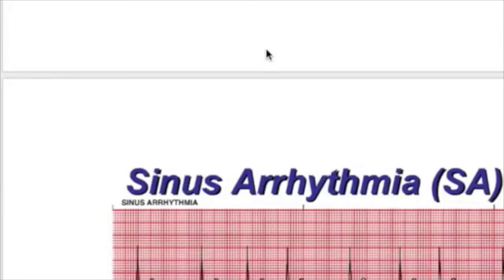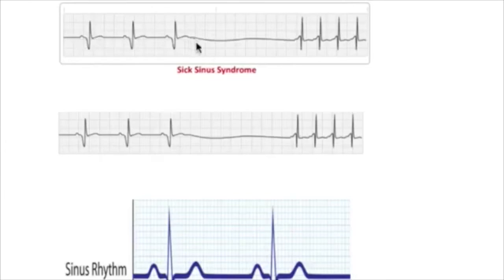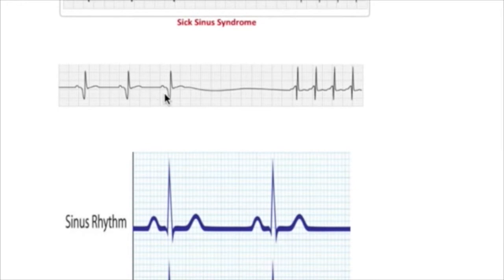When there is sick sinus syndrome or sinus arrest, there is a pause. See that on this ECG on the left — the rate is normal, then there is a pause, and then there is tachycardia. Similarly, in the lower one, the rate is normal, then there is a pause, and then it is irate.